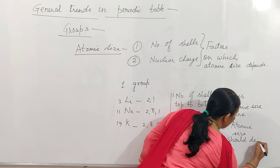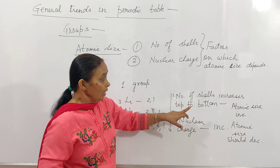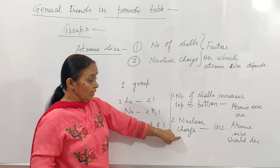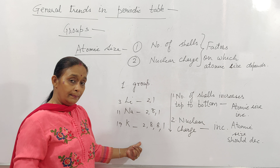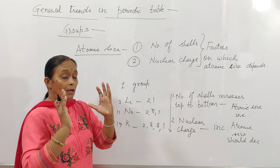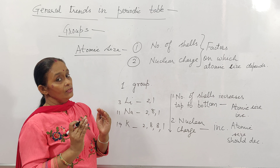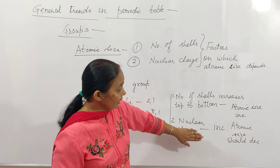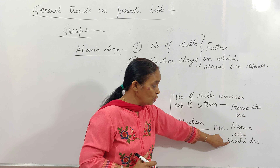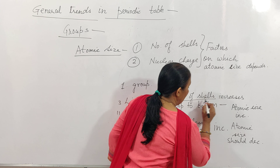Now what happens when you move from top to bottom in a group? The atomic size of various elements changes uniformly. Atomic size actually depends on two factors: first is the number of shells, and second is the nuclear charge.